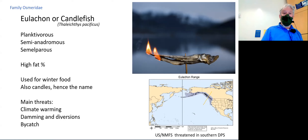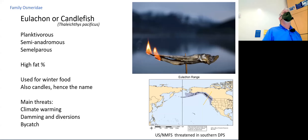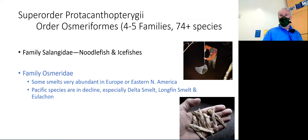The eulachon, or candlefish, is threatened in the southern part of its population but ranges from northern California through the Aleutians in Alaska. It's a small planktivorous, semi-anadromous fish — basically a marine species that returns to fresh or brackish water to spawn — and it's semelparous, living one to two years then dying. It has an extremely high fat content, making it very useful to Native populations as a high-fat winter food that could be dried and stored.